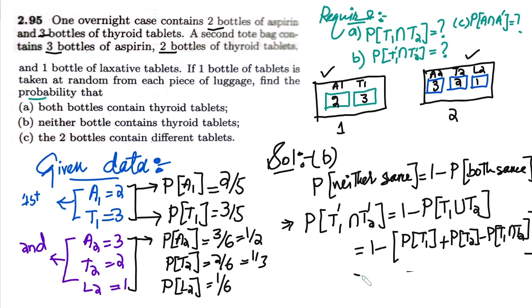Let me now remove this equation from here so that I can write all the values which are associated with them. Now it would be 1 minus probability of T1 is given and that is here 3 by 5. 3 by 5 plus probability of T2 is 1 by 3.